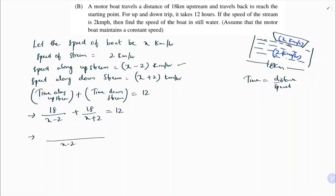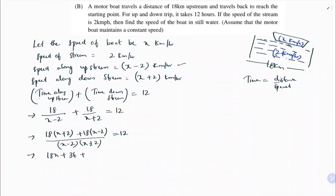Taking the LCM as (x minus 2)(x plus 2), we get: 18(x + 2) + 18(x − 2) = 12(x − 2)(x + 2). Using the identity (a + b)(a − b) = a² − b², the right side becomes 12(x² − 4).